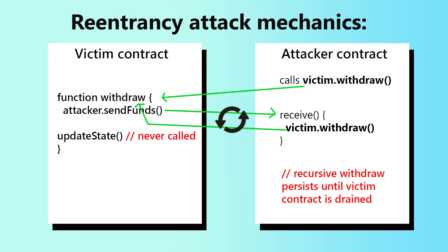Re-entrancy attacks happen when malicious contracts — we'll call them attacker contracts — call victim contracts in such a way that they gain more control over code execution than was ever intended, disrupting the intended state of the victim contract and manipulating it in unexpected ways.